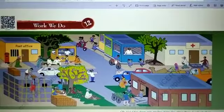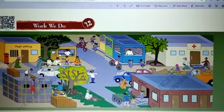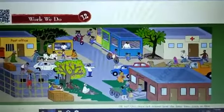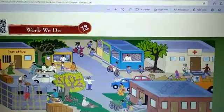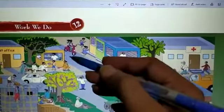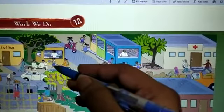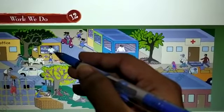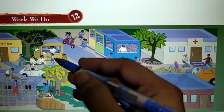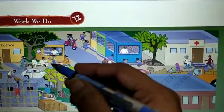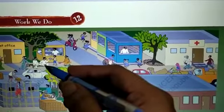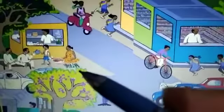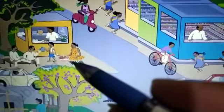Now you can see a tea stall where a man is preparing tea and a small child is serving tea and other eatables. Here is a lady who is selling flowers.